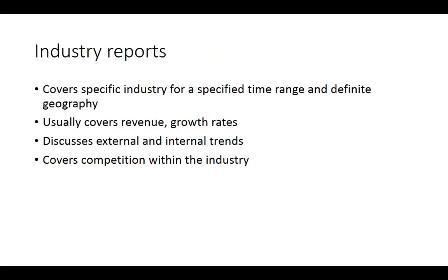Let's look at an industry report first. Industry reports can vary greatly in their structure depending on who's writing them; however, they will have a few key characteristics. They describe business patterns within a specific industry category — this could be very broad like the manufacturing sector, or very specific like coffee shops. Oftentimes industry reports will use an industry classification system like NAICS to specify with great accuracy what kinds of businesses are included. Typically an industry report covers business patterns within a specific time frame — quarterly, annually, or biannually — and for a specific geography, such as statewide, national, or international reports.